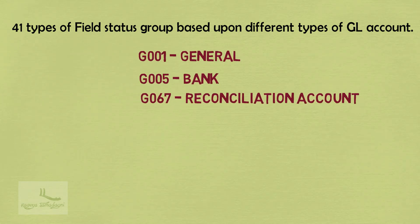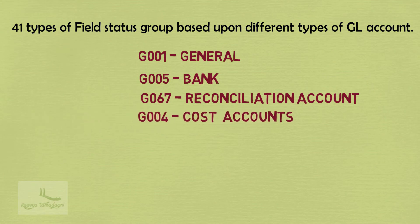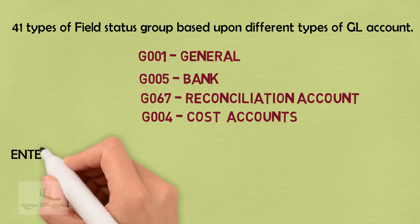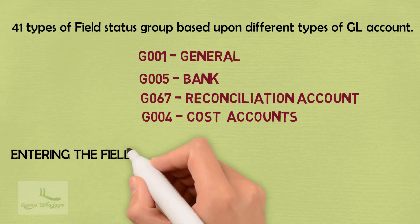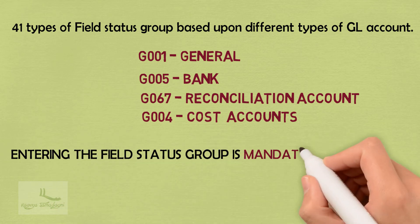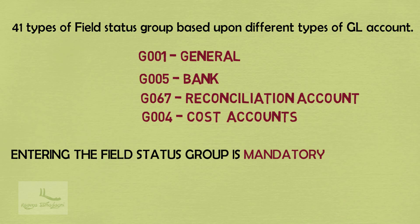The commonly used types are G001 (general), G005 (bank), G067 (reconciliation account), and G004 (cash accounts). Like this, we have 41 types of field status group. Without giving the field status group, it is not at all possible to create the GL account. Hence, while creating the GL account, providing the field status group is very much mandatory.